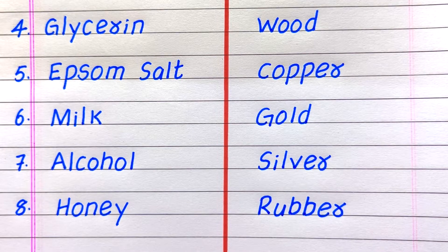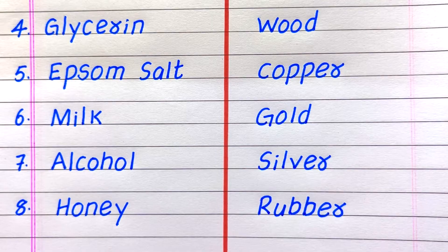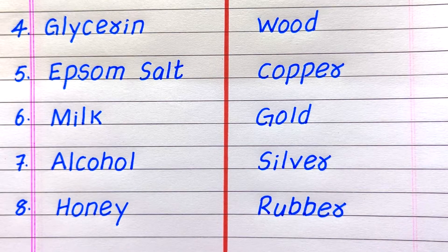Fourth example of an insoluble substance is wood, fifth copper, sixth gold, seventh silver, eighth rubber.